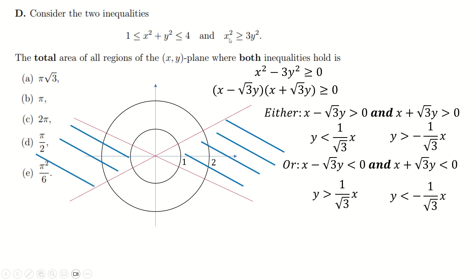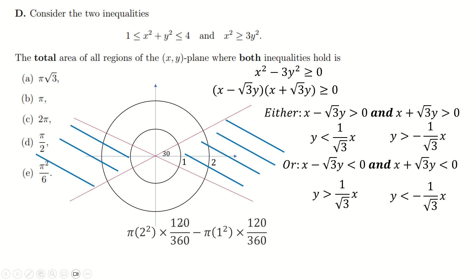You could also just think this through logically: if you want x² > 3y², you need x to be much bigger than y, so you want to be closer to the x-axis. This gradient is 1/√3, which means tan of this angle is 1/√3, so the angle is 30°. I'm now working out the area of the two sectors: 30+30+30+30 = 120°. I do π × 2² × (120/360) minus π × 1² × (120/360), which gives 4π/3 minus π/3 = π. So the answer to part D is π.